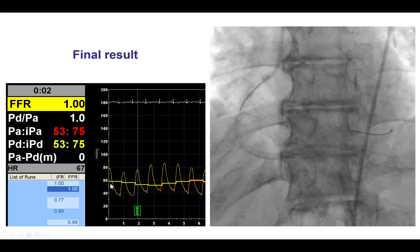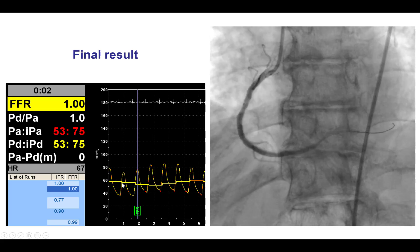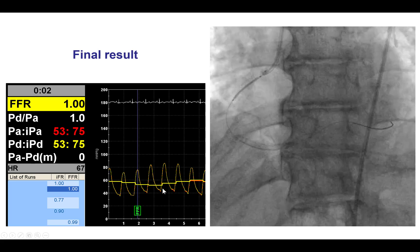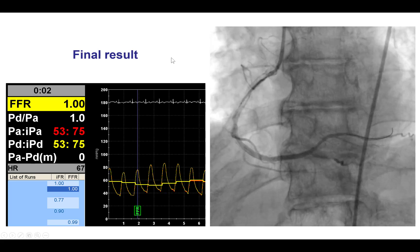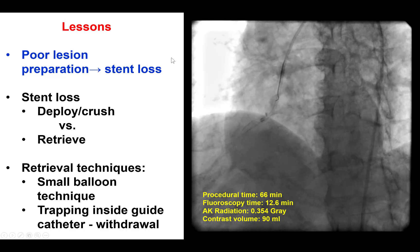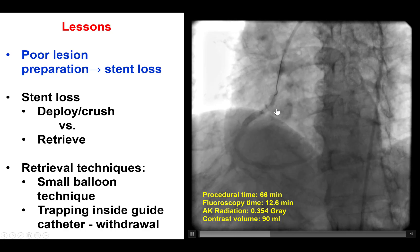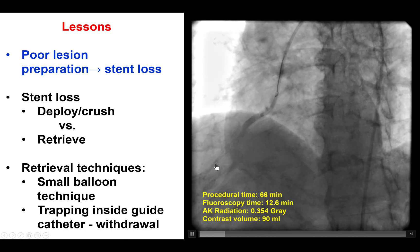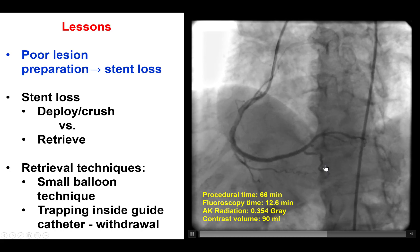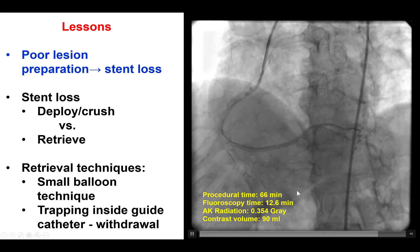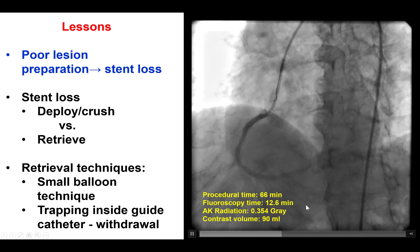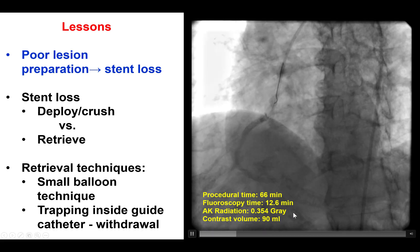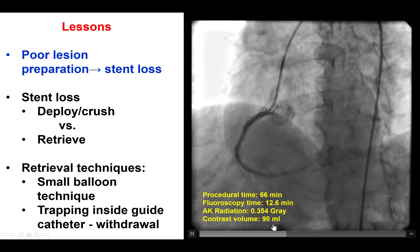We then had no difficulty delivering stents all the way from distal to proximal, covering all the way to the ostium, obtaining a nice result. We performed IFR afterwards to confirm that the results were adequate, and indeed the IFR afterwards was 1.0. The patient had an uneventful recovery and has not had any recurrent chest discomfort during three months of follow-up. It took about one hour, 12.6 minutes of fluoro, 0.35 gray, and 90 mLs of contrast.